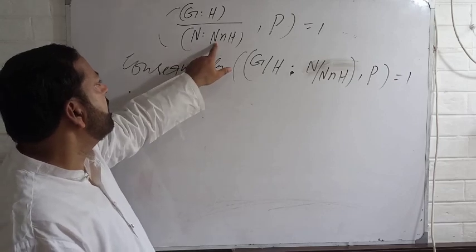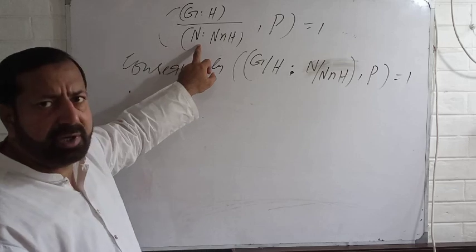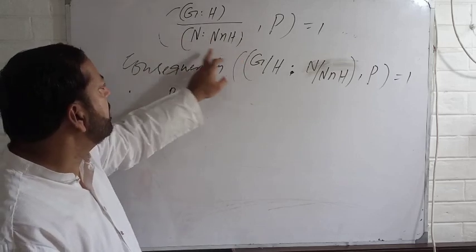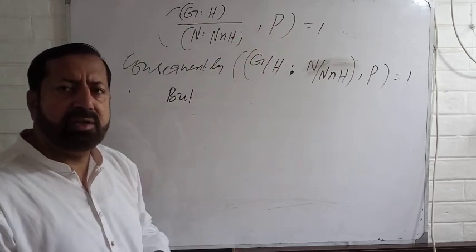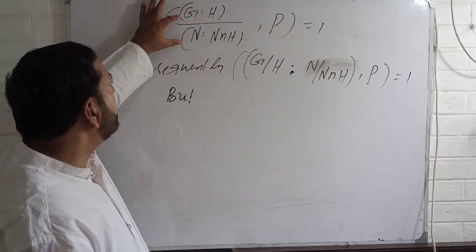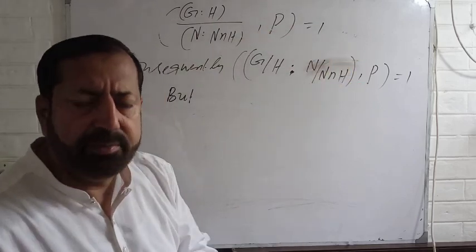you have established that N intersection H is a Sylow P in capital N. So that's why this index is also prime to P, and I have shown in my last lecture that this number and P both are relatively prime.